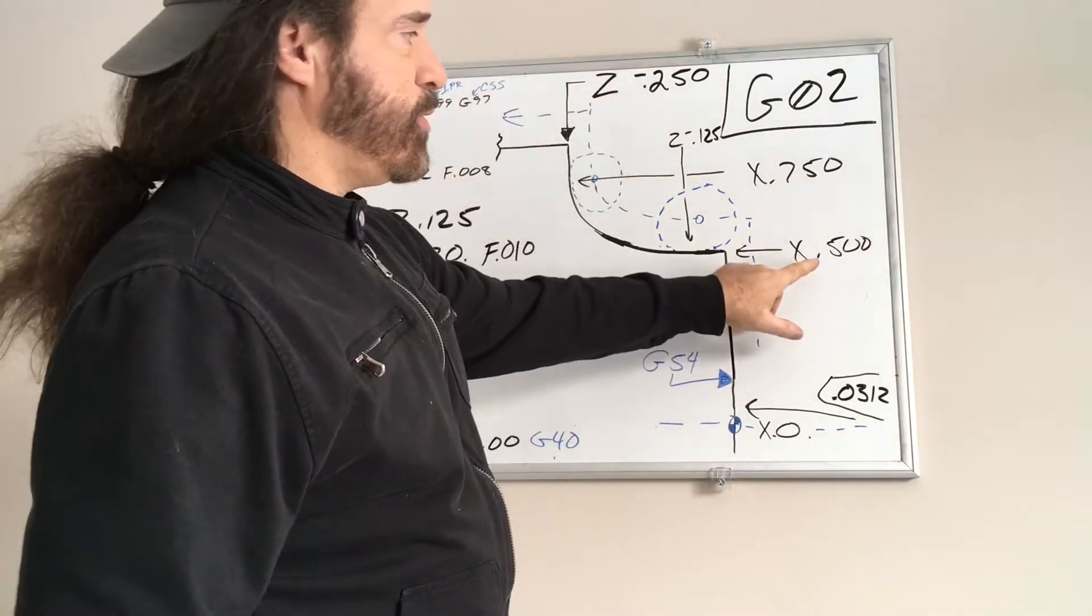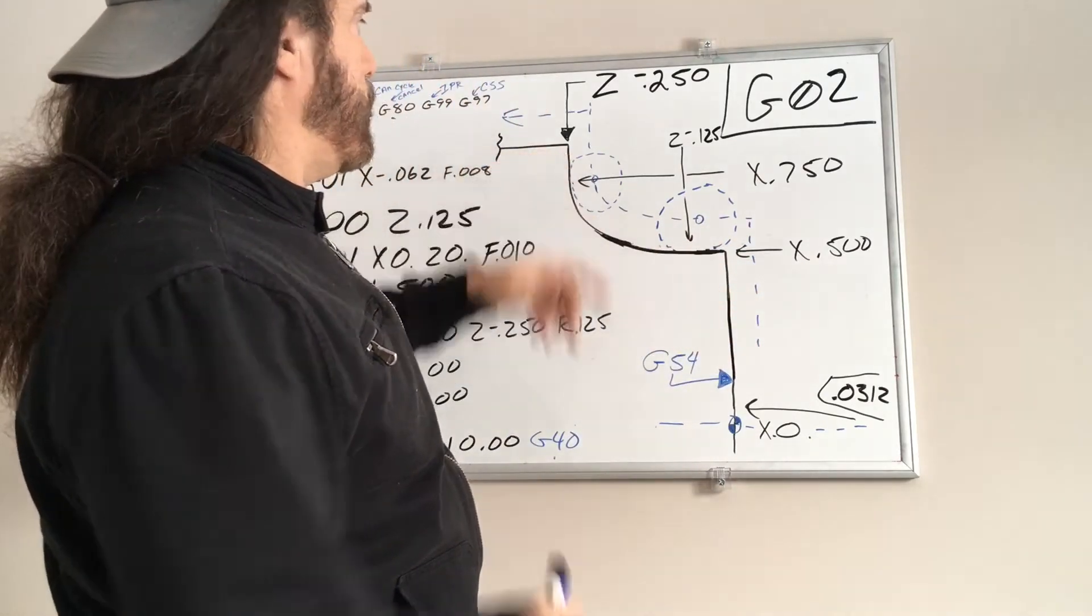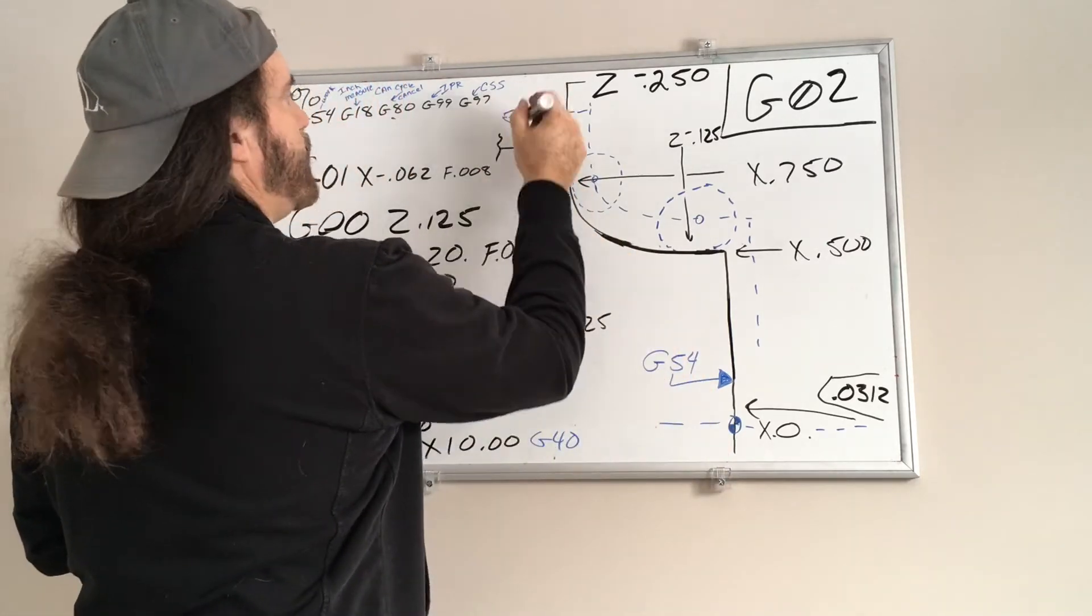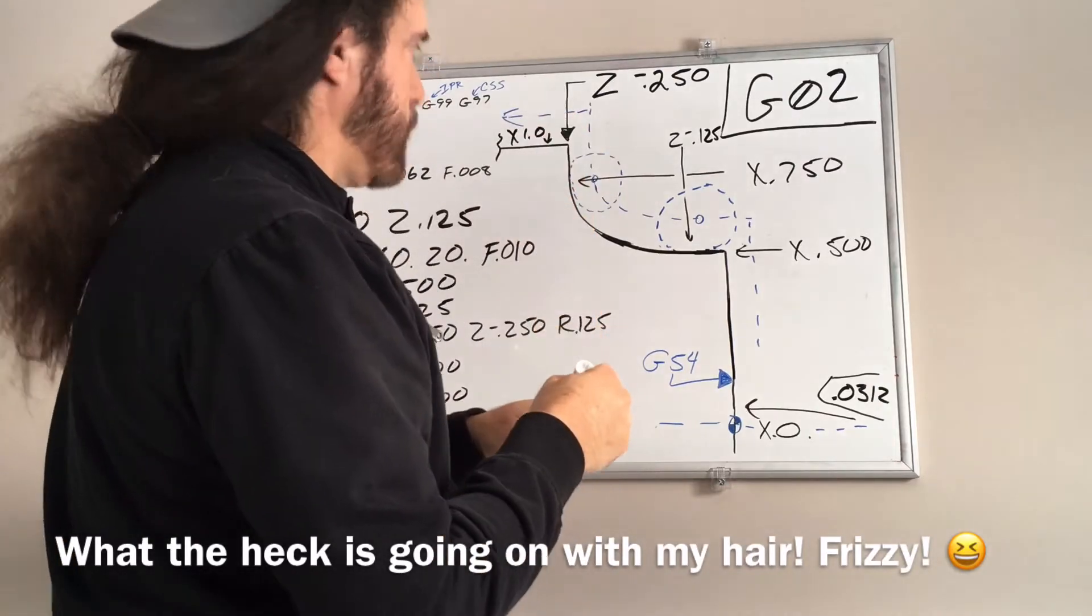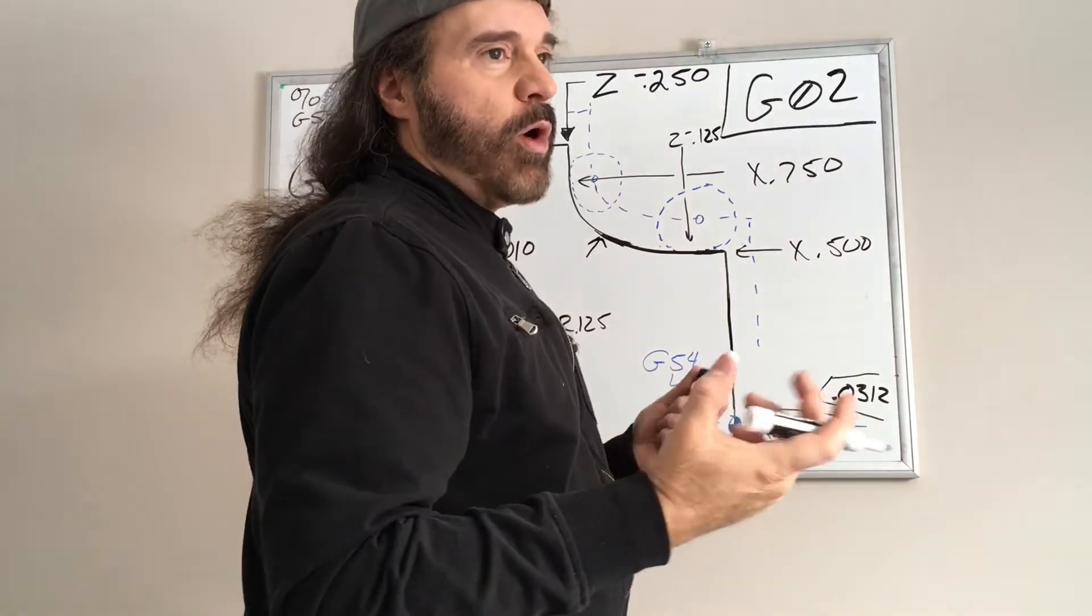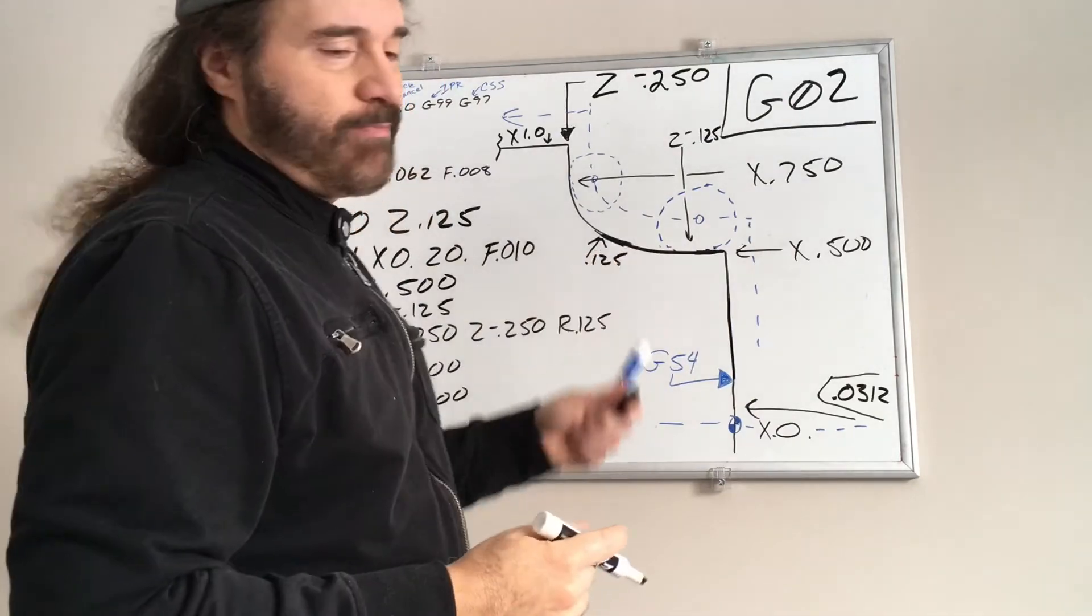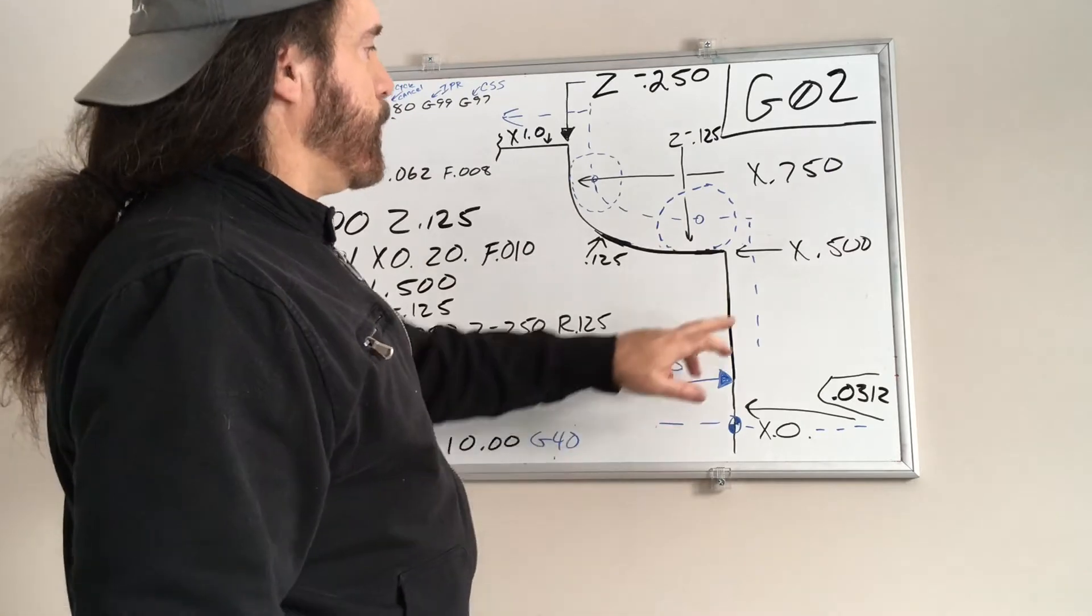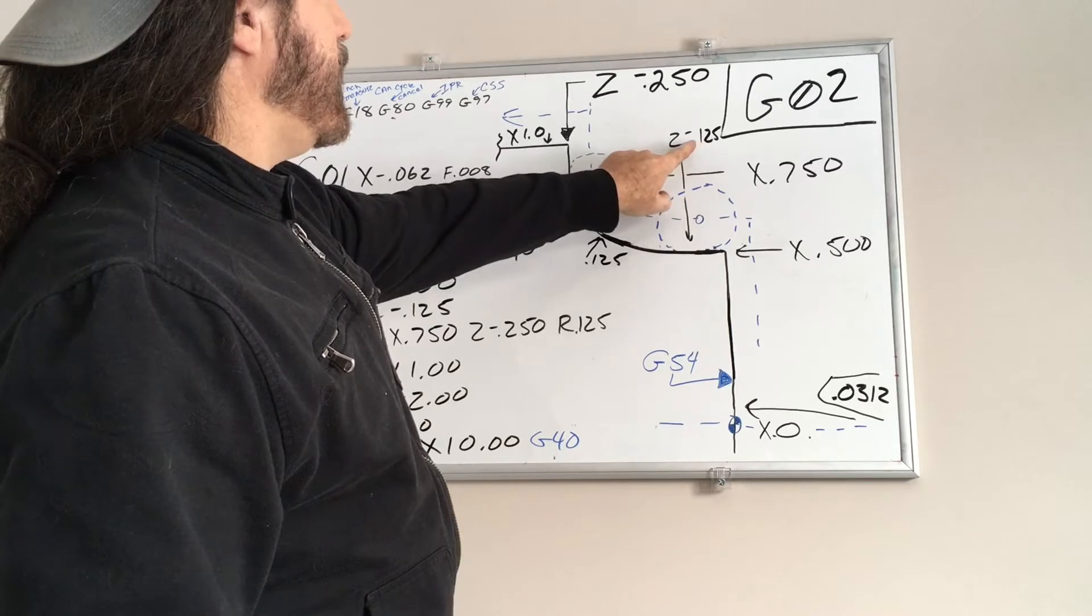So what's the difference? Let's say we wanted to come up to a dimension of a half an inch, point five. We want to end up at X1.0. Say we want to make it a one-eighth radius, point one two five. I know it's not to scale.